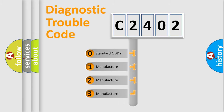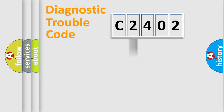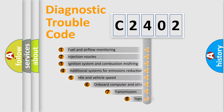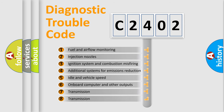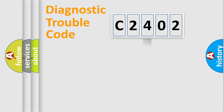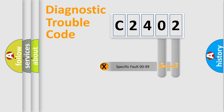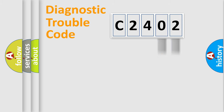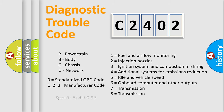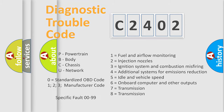If the second character is expressed as zero, it is a standardized error. In the case of numbers 1, 2, or 3, it is a more specific expression of a car-specific error. The third character specifies a subset of errors. This distribution is valid only for the standardized DTC code. Only the last two characters define the specific fault of the group, and such a division is valid only if the second character is expressed by the number zero.